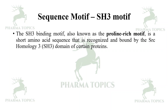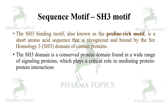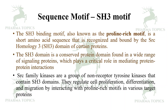Next is the SH3 binding motif, also known as the proline-rich motif. It is a short amino acid sequence that is recognized and bound by the Src homology domain of certain proteins. The SH3 domain is a conserved protein domain found in a variety of signaling proteins. It mediates protein-protein interactions and regulates cell proliferation, differentiation, and migration by interacting with proline-rich motifs in various target proteins.